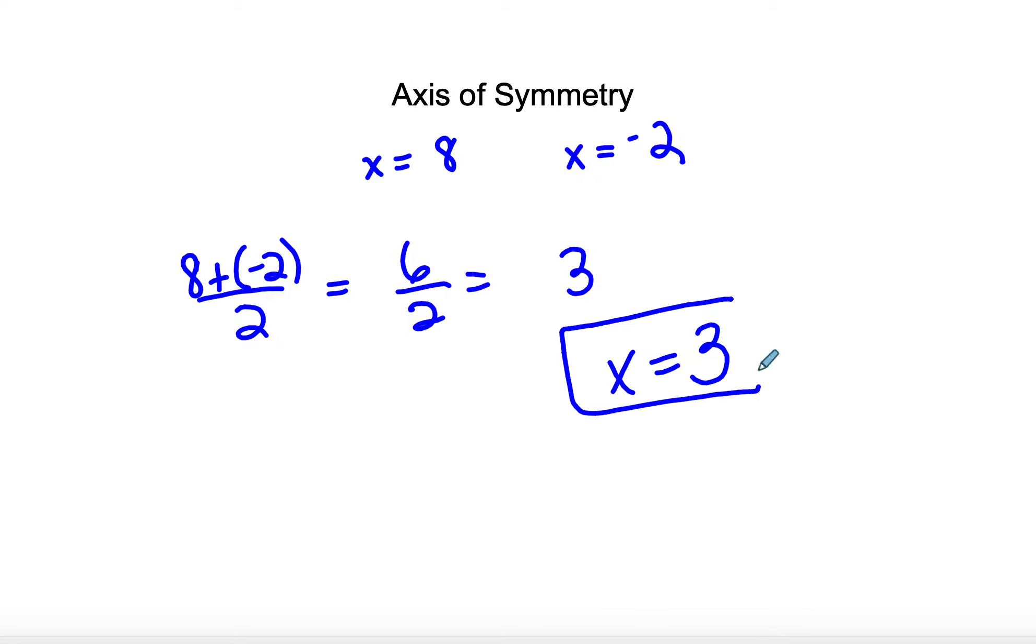Okay, so if we don't have a graph, and we know that the x-intercepts are x equals 8 and x equals negative 2, what we're going to do is we're going to say 8 plus negative 2 divided by 2. So 8 plus negative 2 is 6, divided by 2 is 3, so our axis of symmetry is x equals 3. So you can do it without the graph.